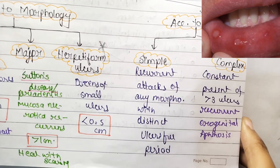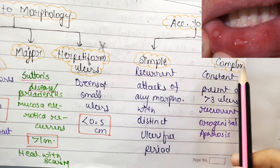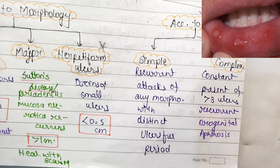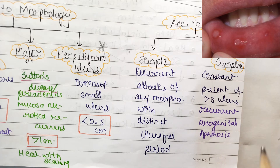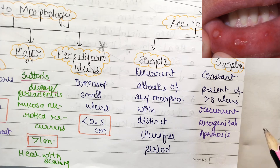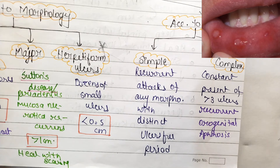Based on severity, aphthous stomatitis is classified as simple or complex. In simple type, there are recurrent attacks of any morphological aphthae with distinct ulcer-free periods. In complex type, there is a constant presence of more than three ulcers and recurrent orogenital aphthosis.